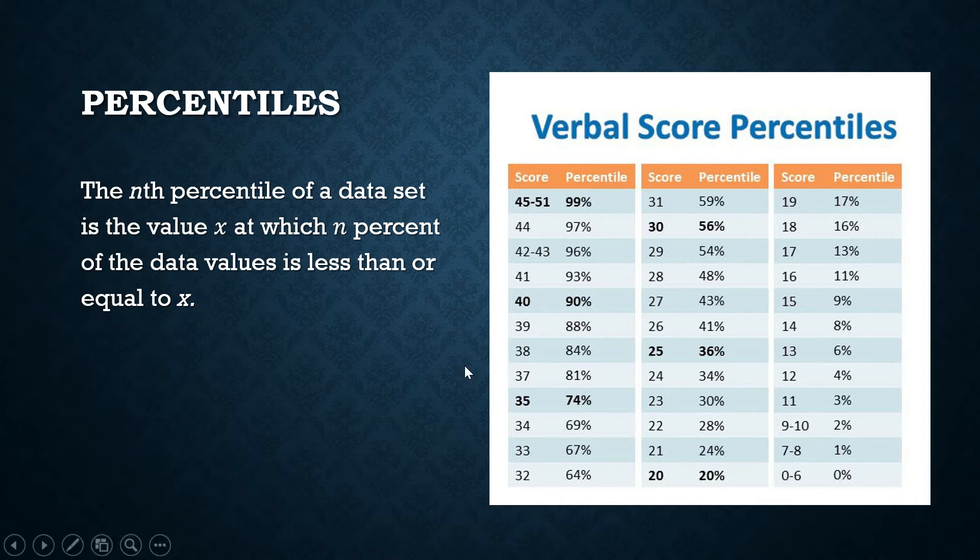Let's say, for example, your score is 25. Its percentile score is 36. What is the meaning of that? It means that 36% of the students who took that exam had scores that are less than or equal to 25. It's another way of saying you did better than 36% of the students who took the exam.